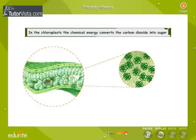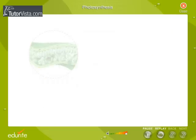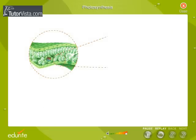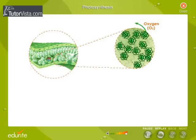Carbon dioxide enters the chloroplast where the previously stored chemical energy converts the carbon dioxide into sugar. As a by-product of this process, oxygen is released into the air.